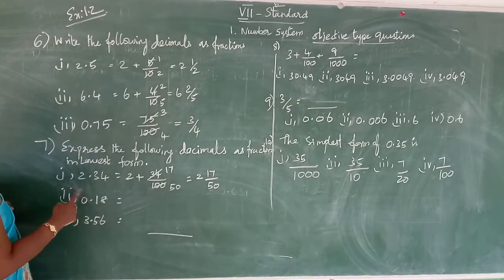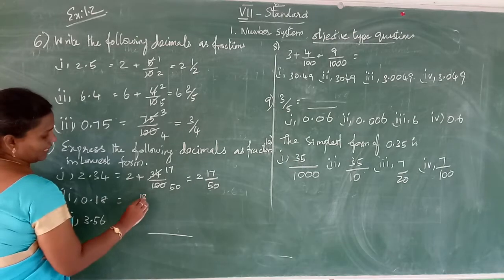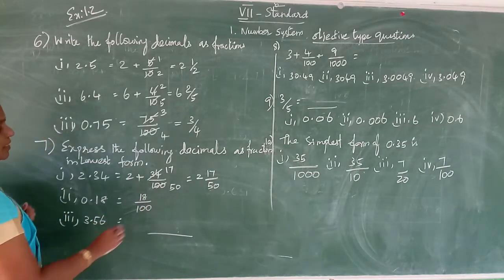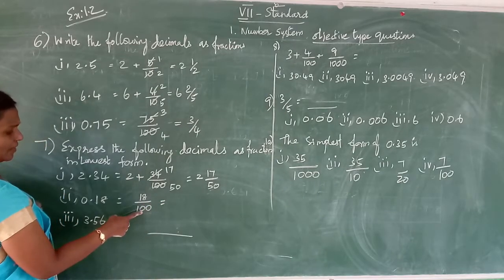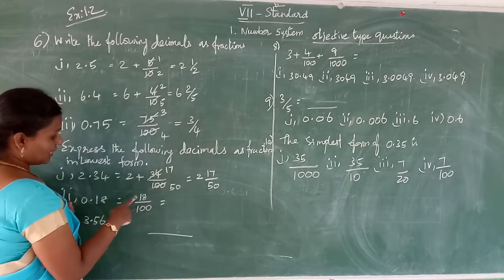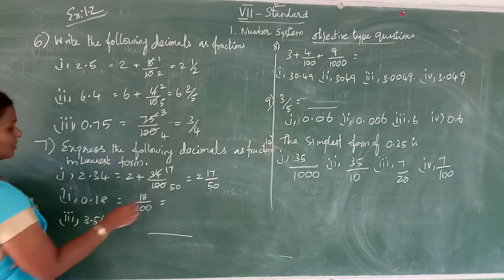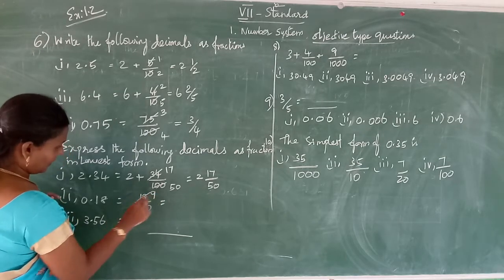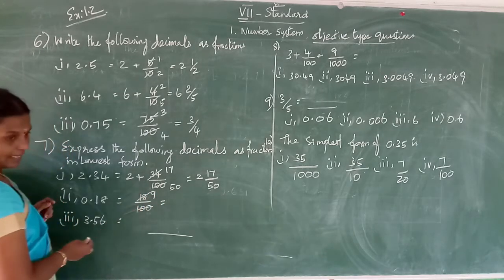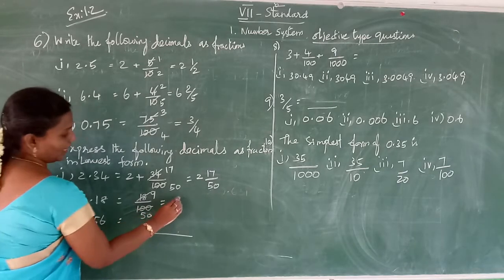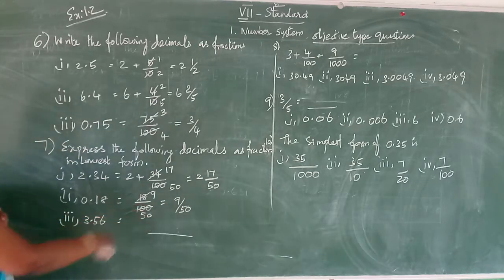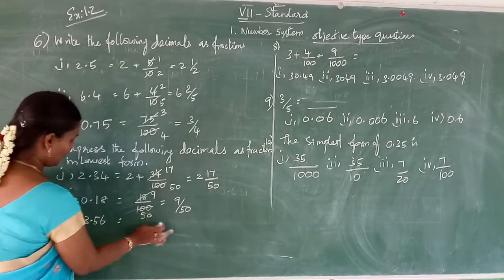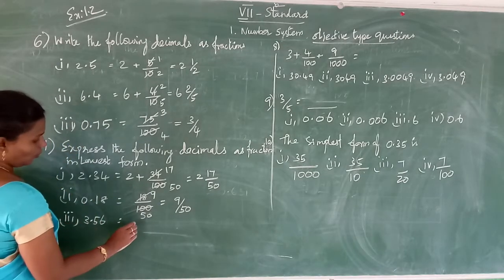See the second one: 0.18. No whole part, so 18 by 100. Cancel with the 2 times table: 18 divided by 2 is 9, 100 divided by 2 is 50. So 9 by 50.